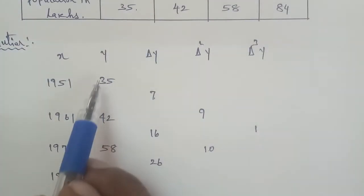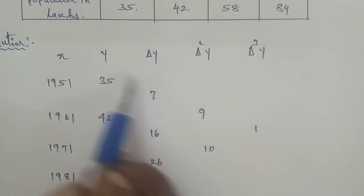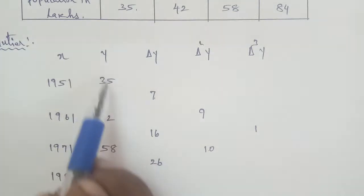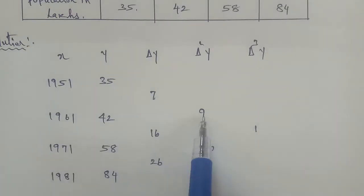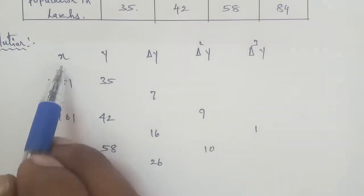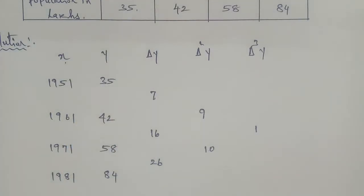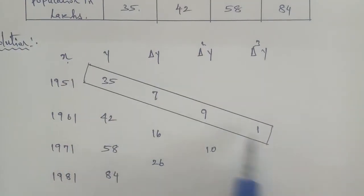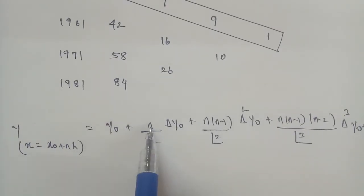From the difference table, we identify the forward values: x₀ = 1951, y₀ = 35, Δy₀ = 7, Δ²y₀ = 9, Δ³y₀ = 1. These are the box entries taken from the first row of the difference table.